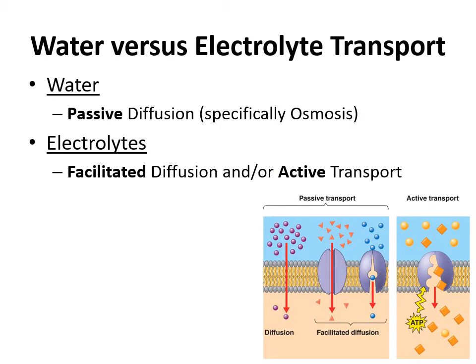Reviewing the transport mechanisms: water moves through osmosis, which is passive diffusion — from high to low concentration, requiring no energy and no special proteins. Electrolytes move by either facilitated diffusion, which requires protein-based channels but still goes from high to low concentration without energy, or active transport.